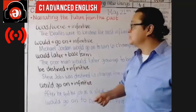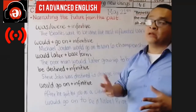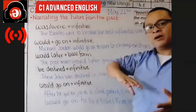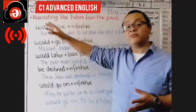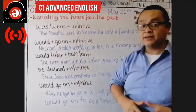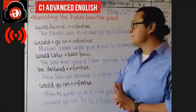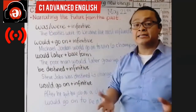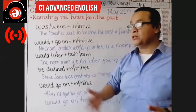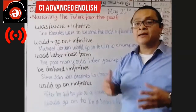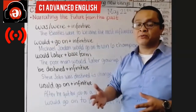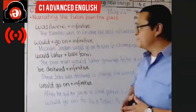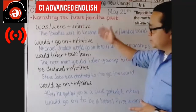I'll give you some examples. This is mostly used when writers want to make reference to the future but from a past perspective. We're going to talk about famous people and personalities, and you would usually find this type of writing within biographies and that type of book.